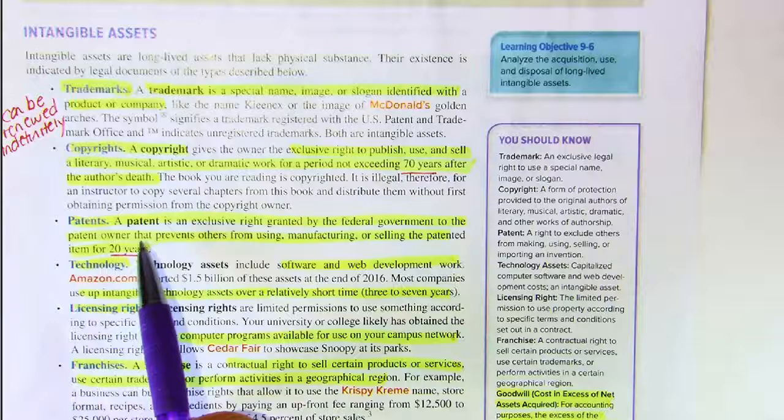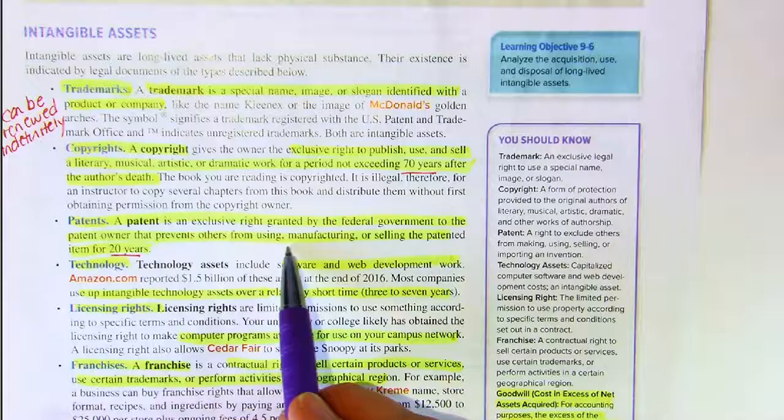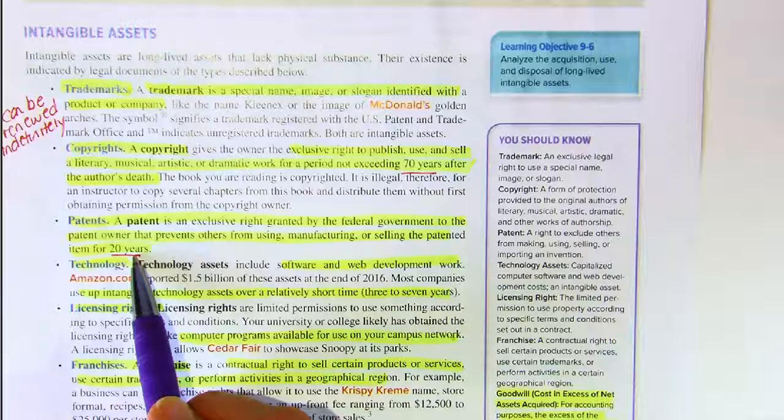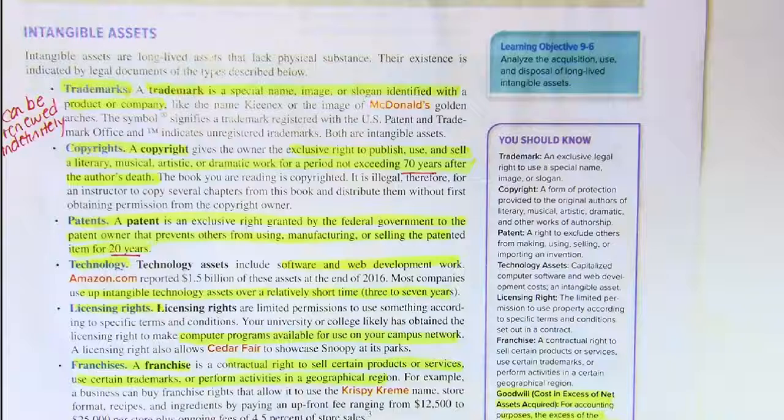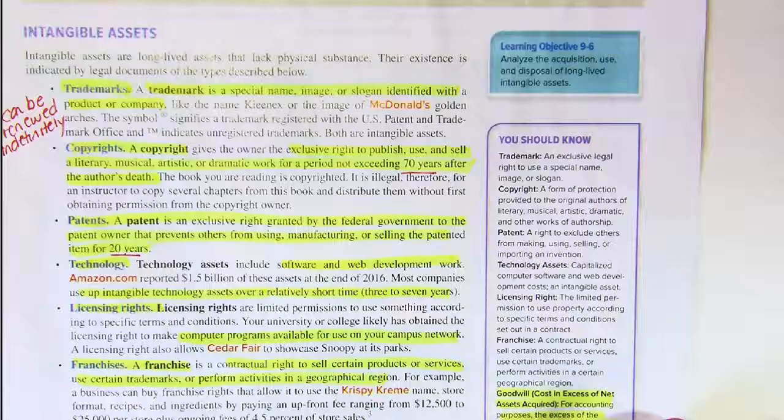Patents are an exclusive right granted by the federal government to the patent owner that prevents others from using, manufacturing, or selling the patented item for 20 years. However, the useful life may be different. For pharmaceuticals, some medication we expect to only be profitable for a certain number of years before an alternative is developed. The same applies to technology products like Apple — they may amortize the design for the current iPhone for only three to five years because they expect to produce another one.